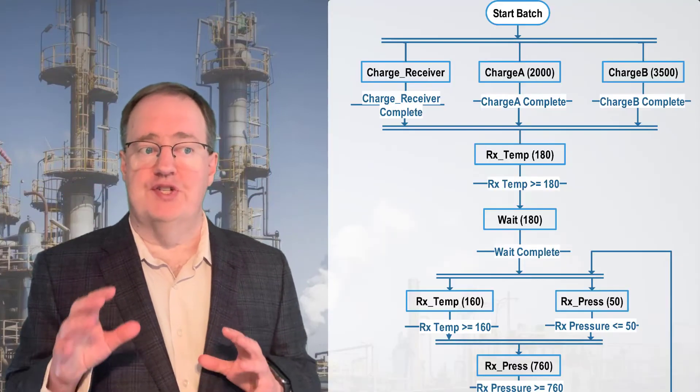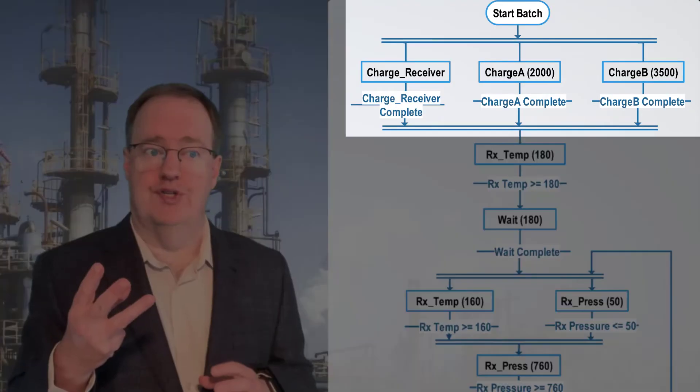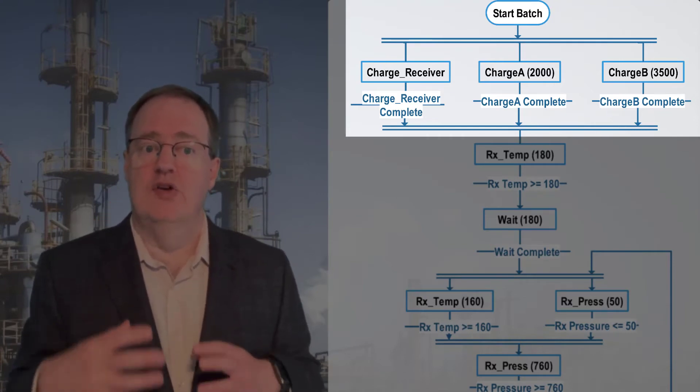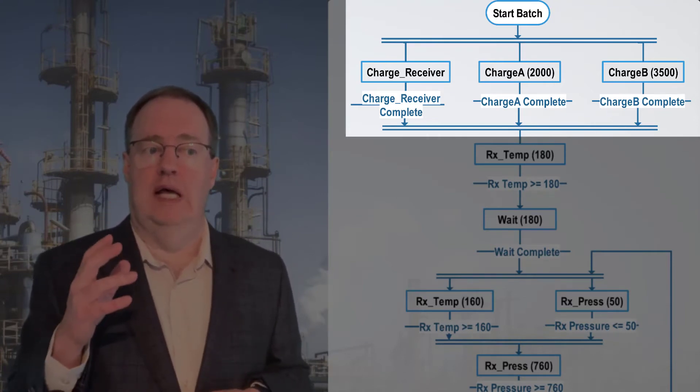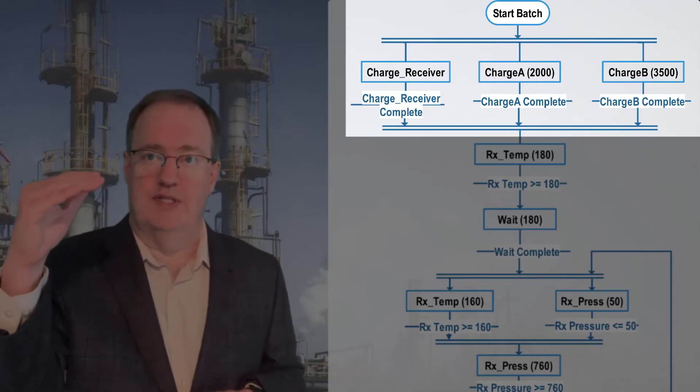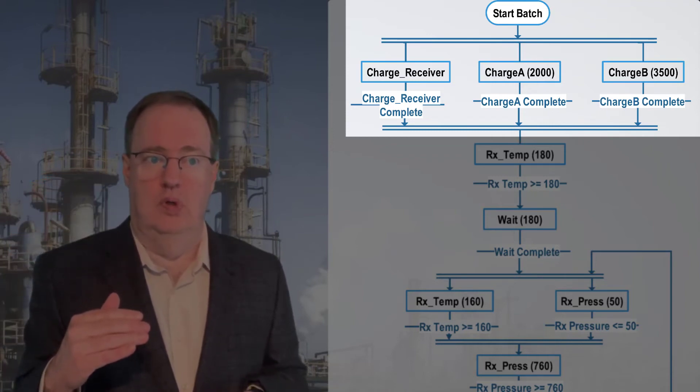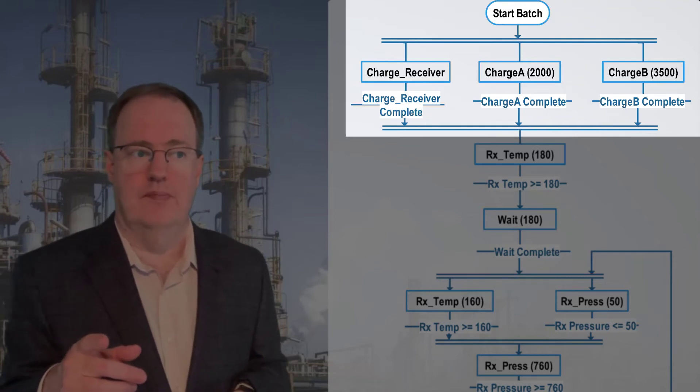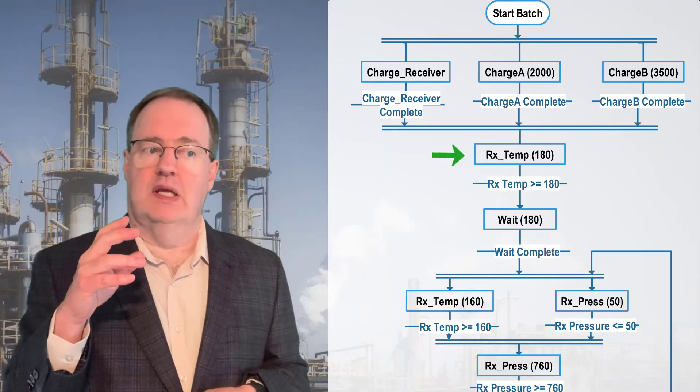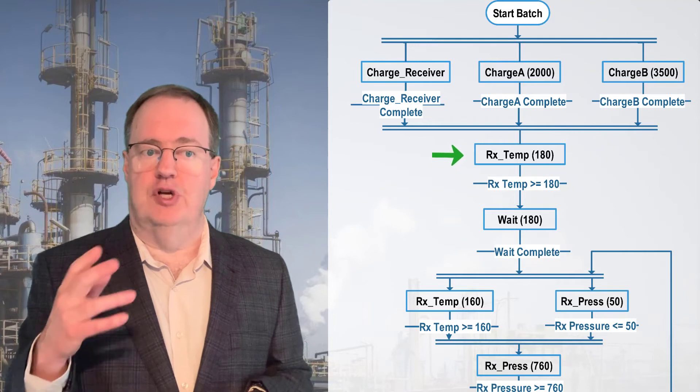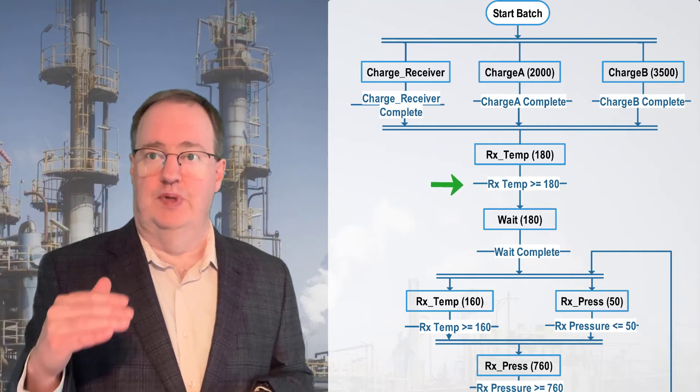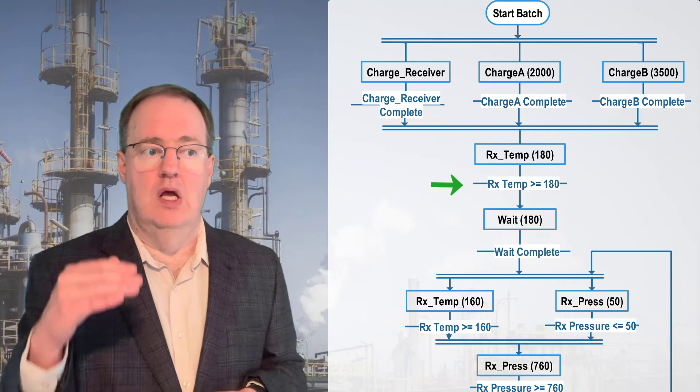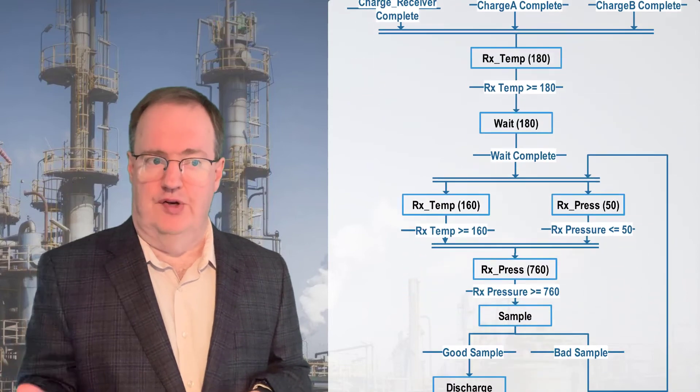The recipe starts with our three charges. They can happen simultaneously, so we can write them as parallel actions with double lines above and below. We wait until all three are complete. Reactor temp gives the reactor a new temperature target, and then we wait for that target to be achieved. The wait step is self-explanatory.